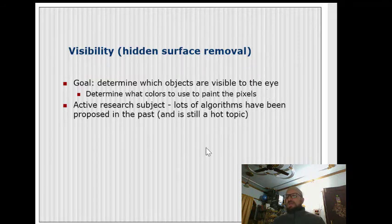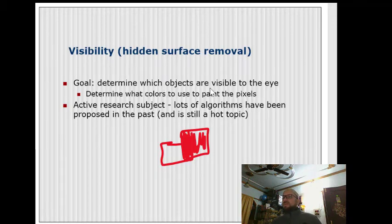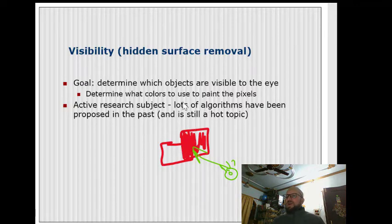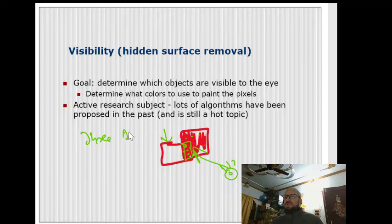Our goal is to determine which objects are visible to the eye. For example, there is a picture and another picture in front of it — the back picture shouldn't be shown because the front one is covering it. You have to determine which objects are visible and which color to use to paint those pixels. You shouldn't use the pixel color of the picture that is hidden on the back.